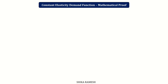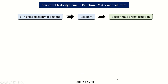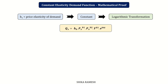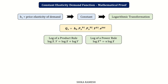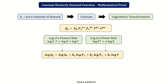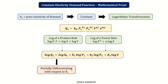The constant elasticity of the demand function can be proved mathematically. To prove that b1, the price elasticity of demand, is constant, we use logarithmic transformation. The equation qx = b0 · px^b1 · po^b2 · y^b3 · e^(b4t) is written in logarithmic form as: log qx = log b0 + b1·log px + b2·log po + b3·log y. Taking the partial derivative with respect to px: ∂ log qx / ∂px = b1 · (∂ log px / ∂px).